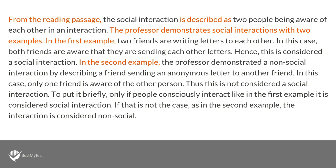From the reading passage, social interaction is described as two people being aware of each other in an interaction. The professor demonstrates social interaction with two examples. In the first example, two friends are writing letters to each other. In this case, both friends are aware that they're sending each other letters. Hence, this is considered a social interaction.